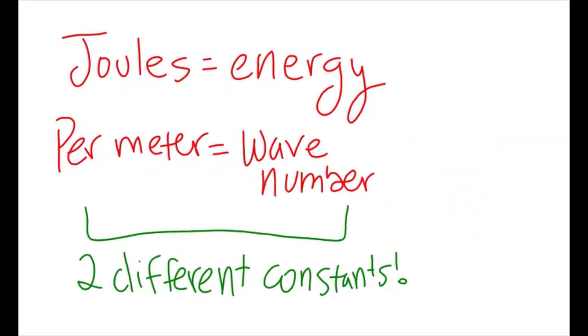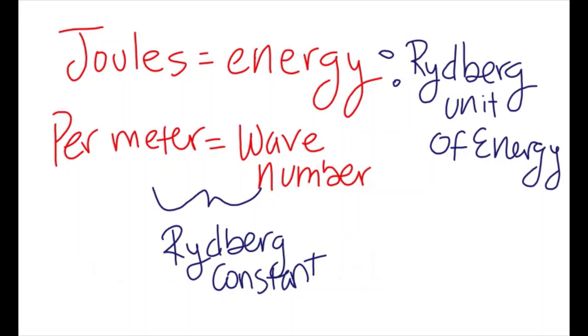In fact, these values are two different constants with two different names. Rydberg's constant is what is expressed in per meters, while Rydberg's unit of energy is what we see in joules.